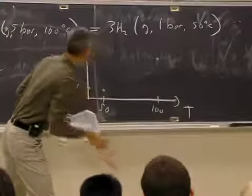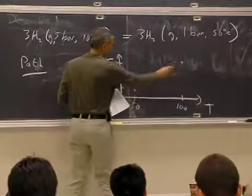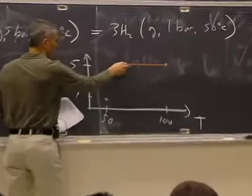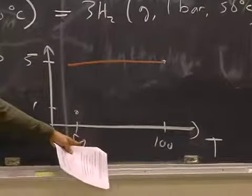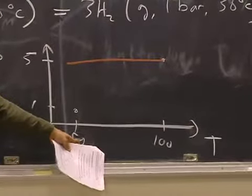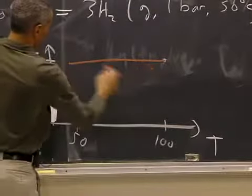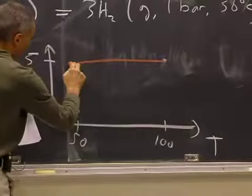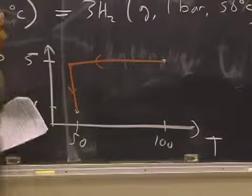So I could have two steps in my path. I could decide, first of all, to keep the pressure constant and lower the temperature. When I get to 50 degrees Celsius, I could choose to keep the temperature constant and lower the pressure. So there's my intermediate state here. This is one of many paths.